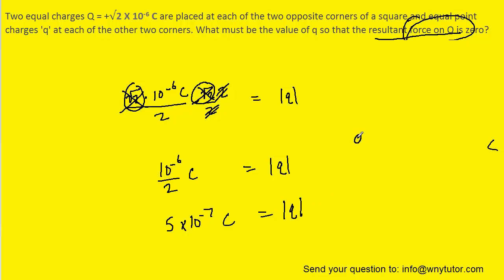Remember, we had concluded that Q was a negative charge. So, in fact, the final answer is negative five times ten to the minus seven Coulombs. That will represent the charge, lowercase q.